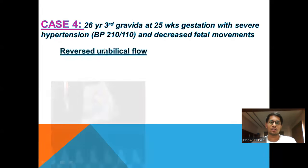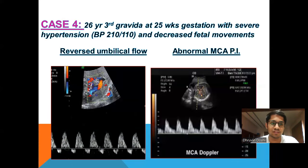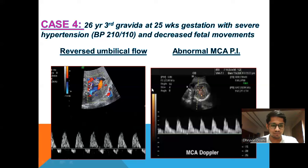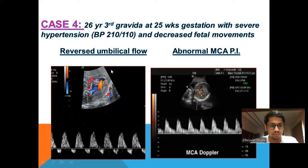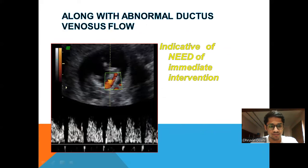The fourth case is a 26-year-old, Gravida 3, at 25 weeks of gestation with severe hypertension. Her BP is 210/110 with decreased fetal movements. On umbilical Doppler, there is reversal of umbilical flow. On MCA, it is also abnormal. On ductal stenosis, there is reversal of the A wave, indicating a need for immediate intervention.